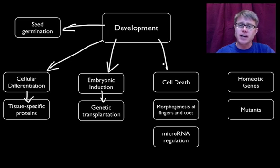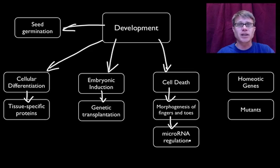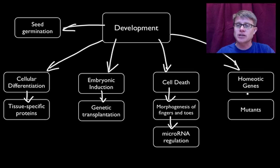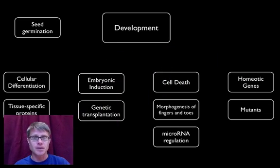Cell death is just as important as cell growth. An example is how the fingers and toes form and the importance of microRNA in regulating that. And finally we'll talk about homeotic genes — how they place different body parts where they should go, and how the study of mutants has unlocked a lot of that.